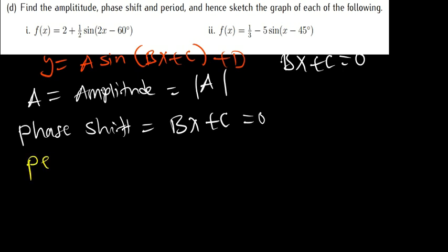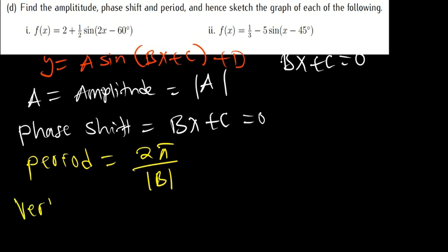How do you find the period? To find the period, you say 2π divided by the modulus of b, where b is the number in front of x. That is the period. Then there is also what we call vertical shift. The vertical shift is d.